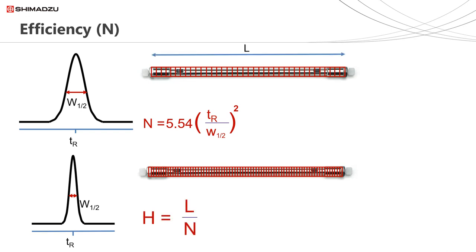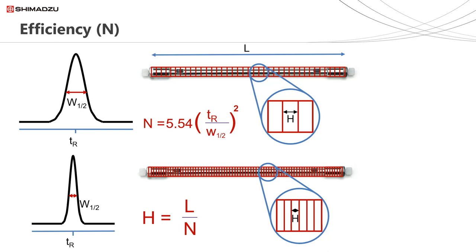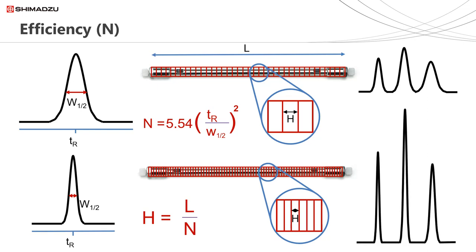If we know the length of the column L, then the column length divided by the plate count gives us H — plate height, or the height equivalent to a theoretical plate. The plate height H is simply the distance between two theoretical plates in a column. The smaller this plate height, the more theoretical plates can fit in a column, giving higher efficiency and narrower peak width. Comparing typical chromatograms, a column with lower efficiency shows broader peaks at the top, and a column with higher efficiency shows narrower peaks at the bottom.